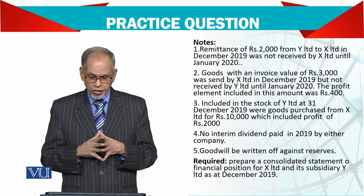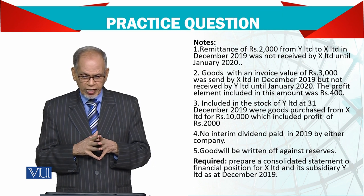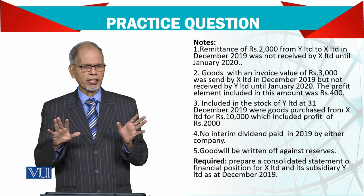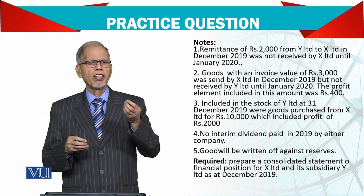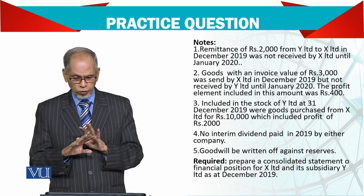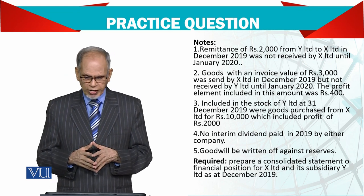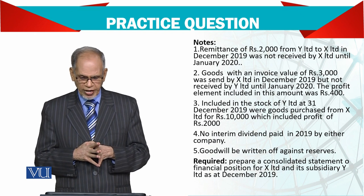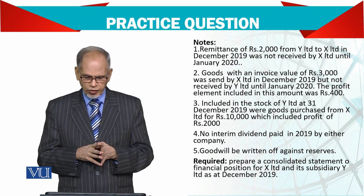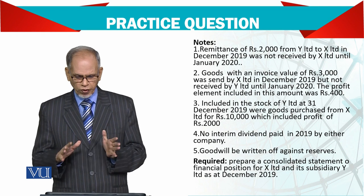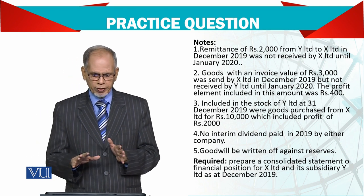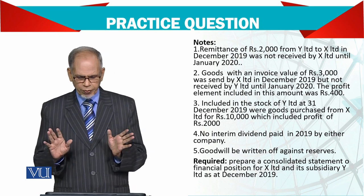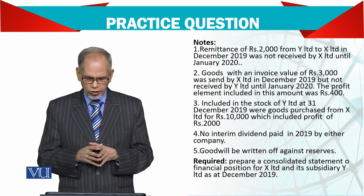Included in the profit elements: यह calculate करके बता दिया — profit का percent नहीं बताया, directly बता दिया। Included in stock of Y Limited December 31st 2019 were goods purchased from X Limited for 10,000 which included a profit of 2,000. उसने खुद ही बता दिया कि stock में कितना profit शामिल है। No interim dividend paid — यह clear है।